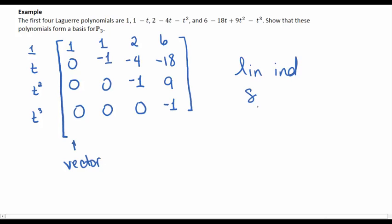And in addition, there's no row of zeros, which means they also span. So these now form a basis.